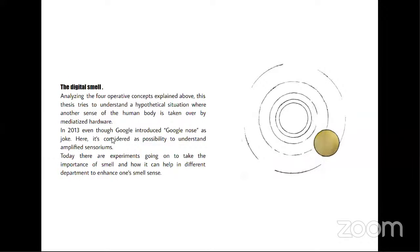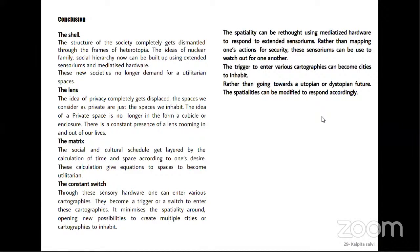The fifth operative concept is the digital smell. Analyzing these four operative concepts, the thesis tries to understand a hypothetical situation where another human sense is taken over by mediatized hardware. In 2013, Google introduced Google Nose as a joke, but here it is considered a possibility to understand the amplified sensorium. In conclusion, spatiality can be rethought using mediatized hardware to respond to extended sensoriums. Rather than mapping one's actions for security, these sensoriums can be used to watch out for one another, and cities can become cartographies to inhabit, modifying spatialities to respond accordingly.